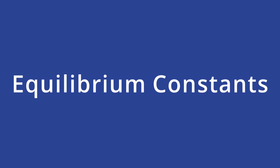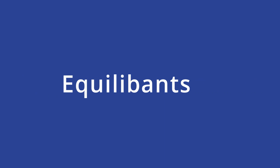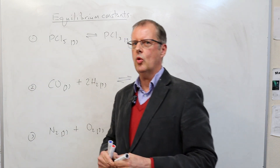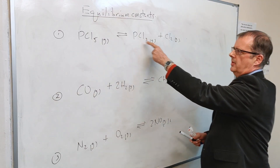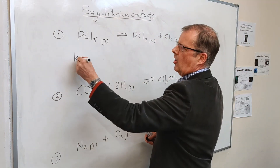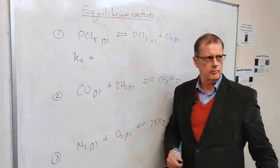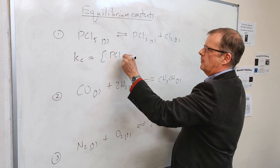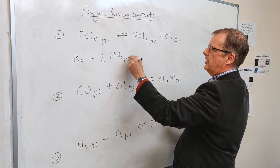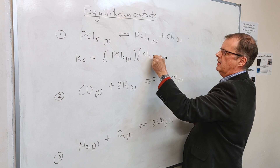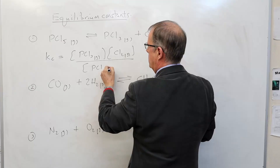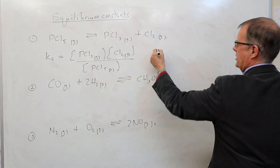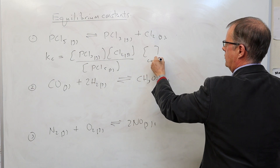When we look at examples of dynamic equilibrium equations in the gas phase, there is a strict relationship between products and reactants called equilibrium constants. Using concentration units, for PCl₅ decomposing into PCl₃ and Cl₂, we call it Kc — and it's always products over reactants. So Kc equals the concentration of PCl₃ times the concentration of Cl₂ divided by the concentration of PCl₅. Square brackets denote concentration.